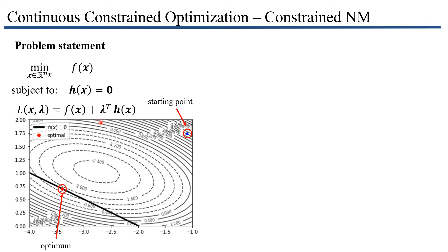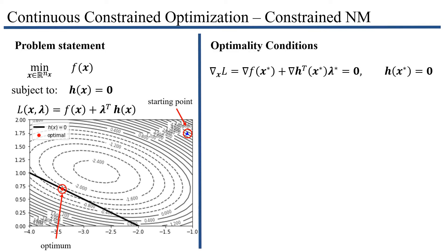This lambda can take values from minus infinity to infinity. In the unconstrained case, our optimality conditions were that the gradient has to be equal to zero. So when a gradient was zero, if I gave you a point and told you it was optimal, you would check the gradient, and if it was equal to zero, then you would say okay, I can believe you.